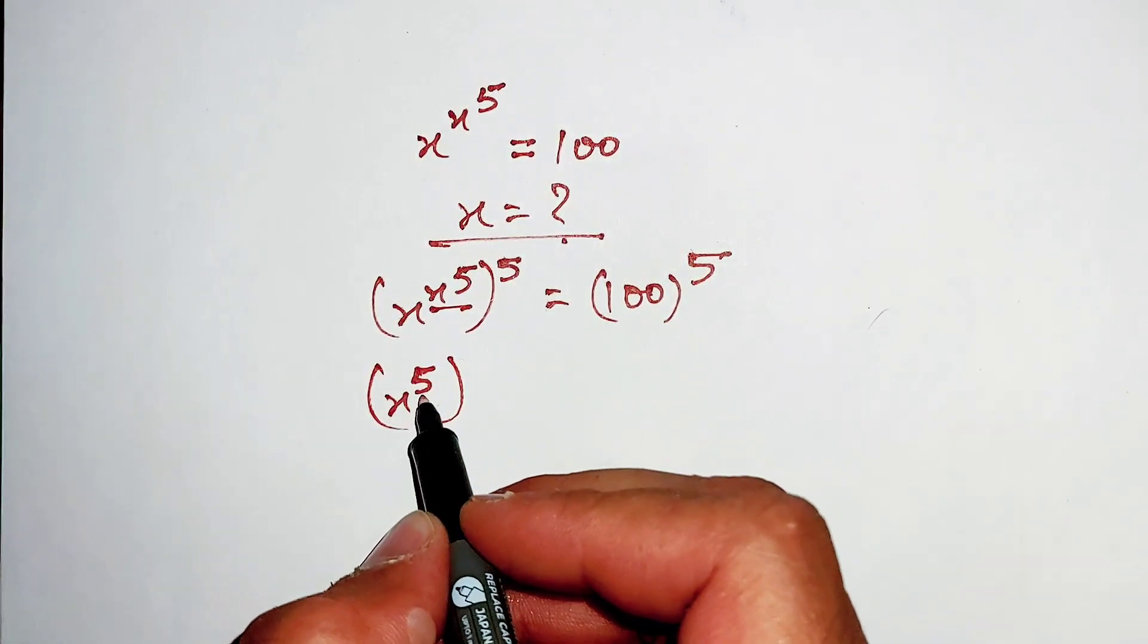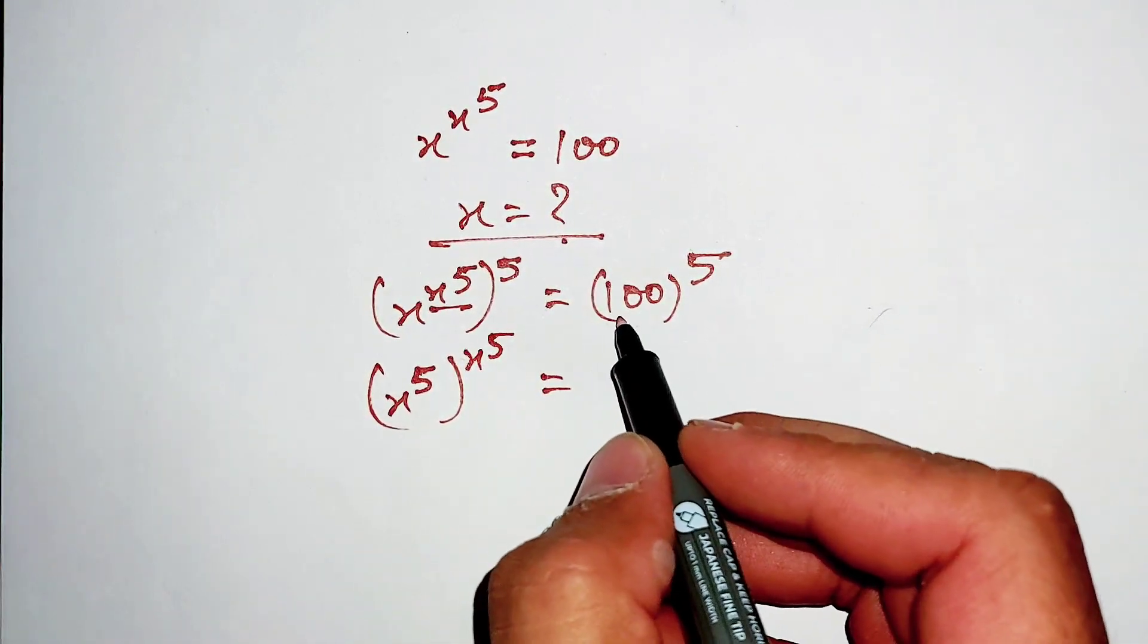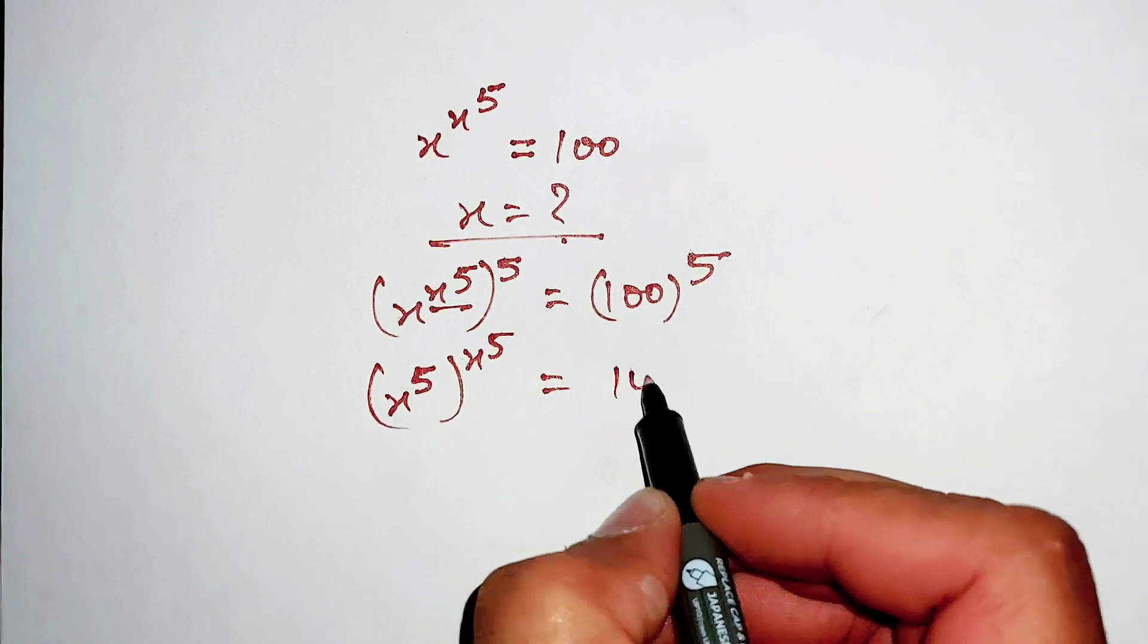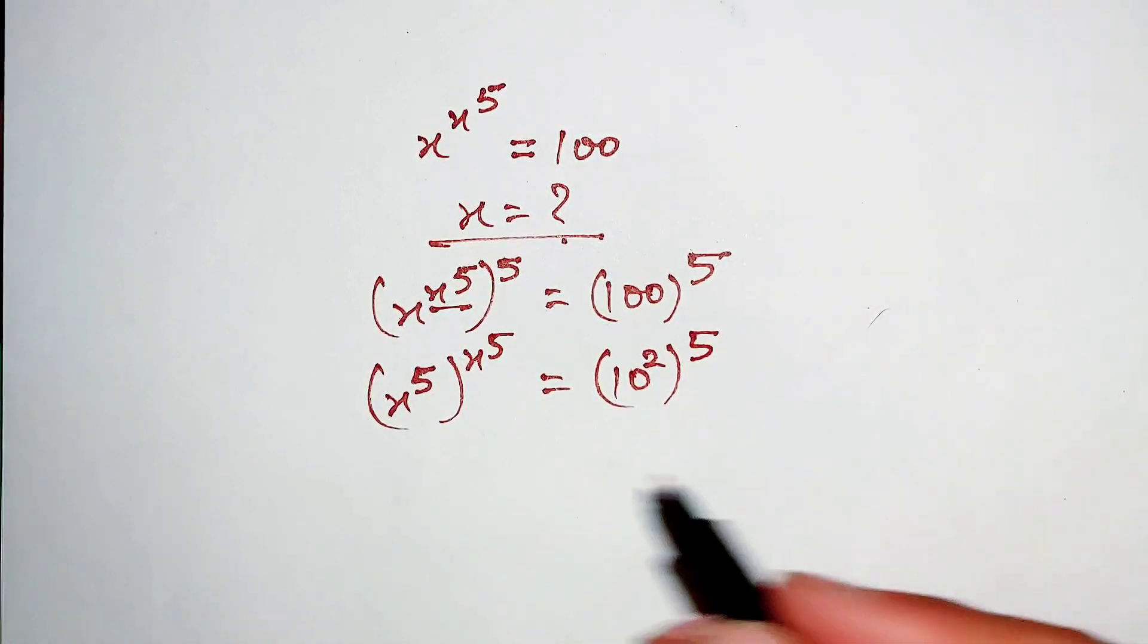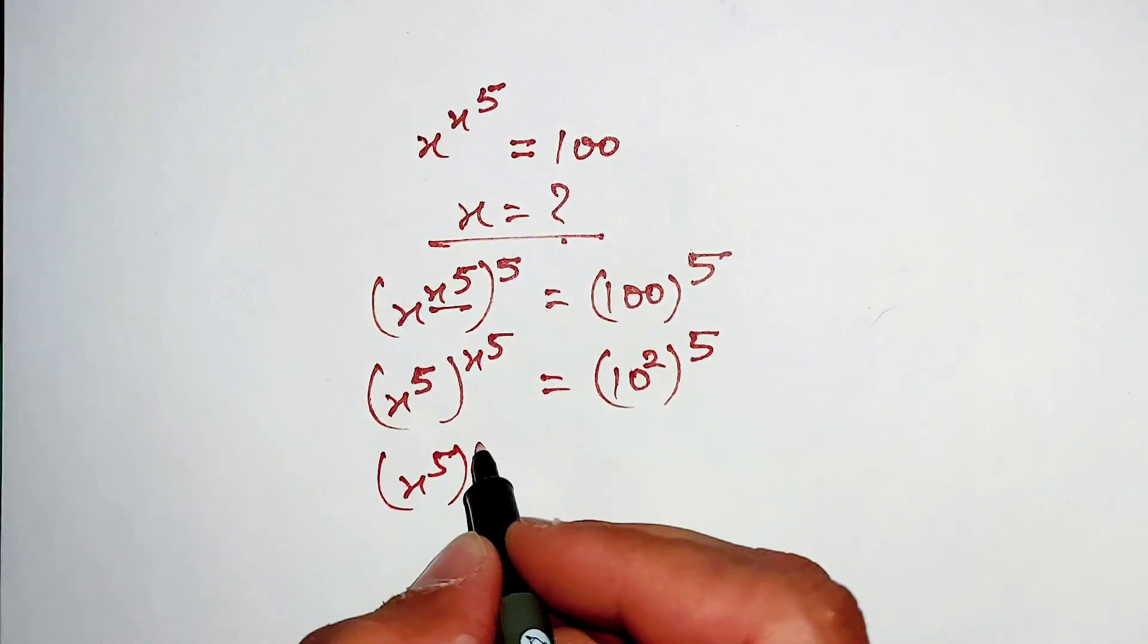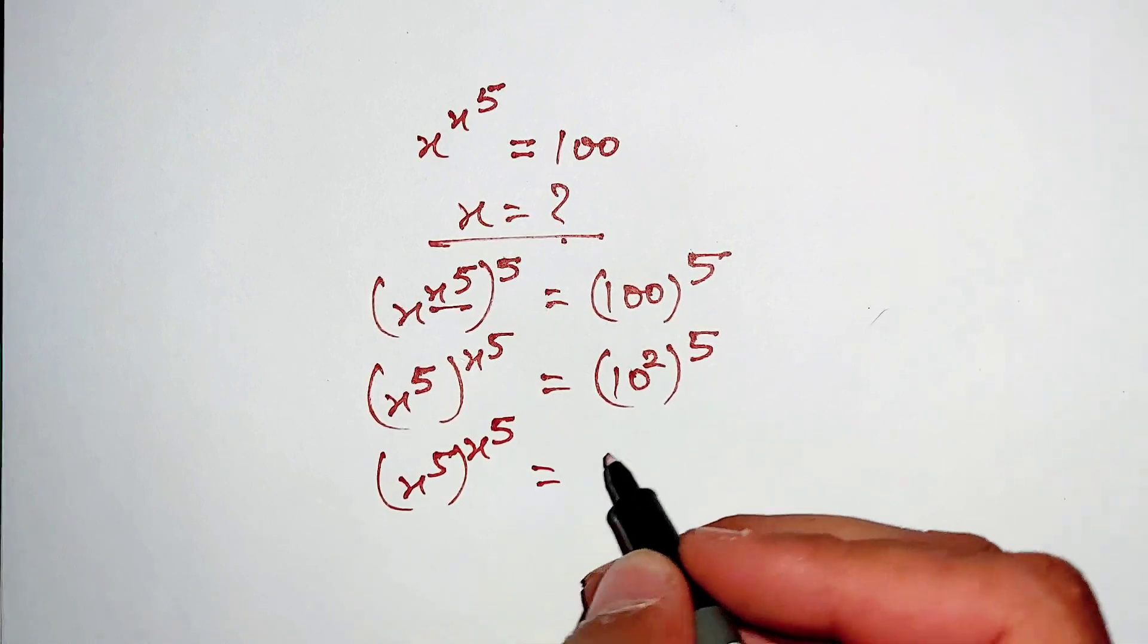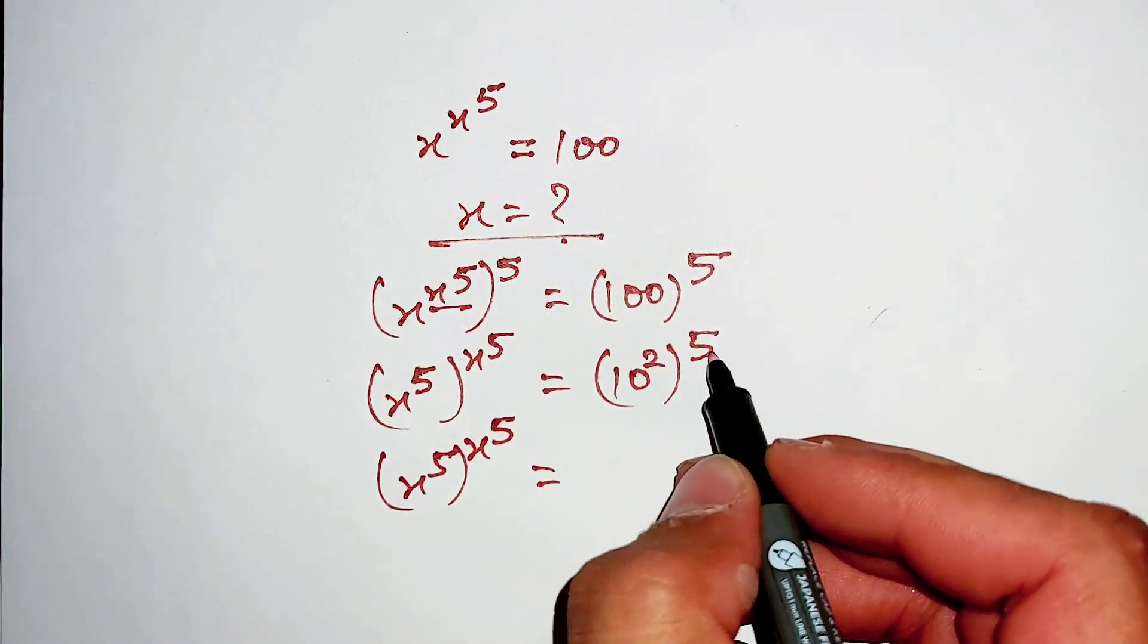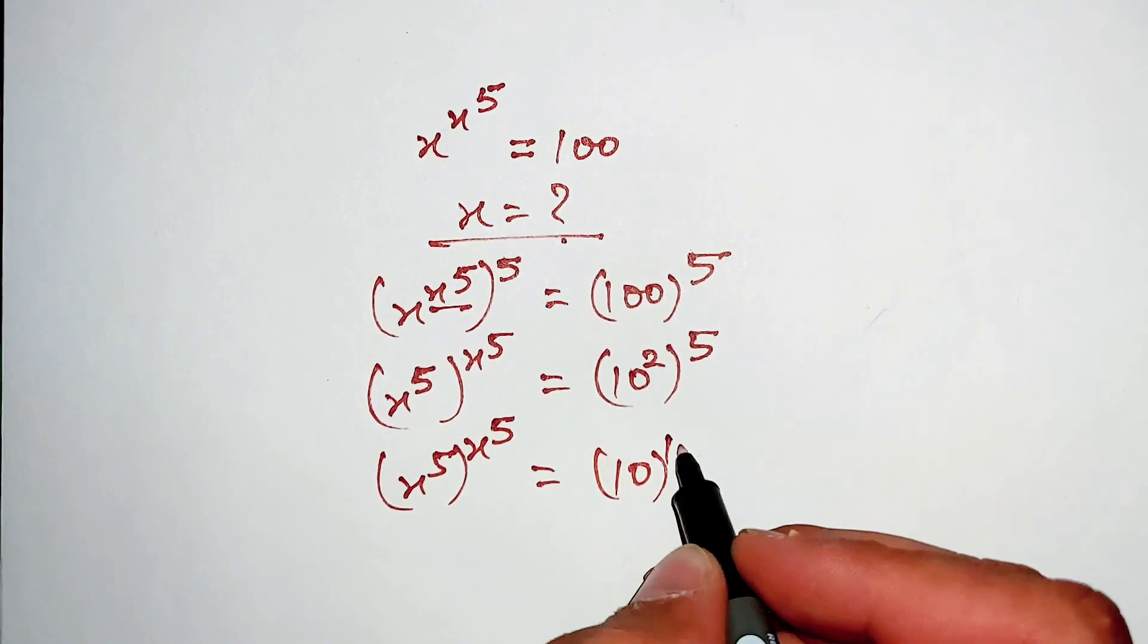This 100 can be written as 10^2, and when raised to power 5 becomes (10^2)^5. Now (x^5)^(x^5) equals 10^(2×5) which equals 10^10.